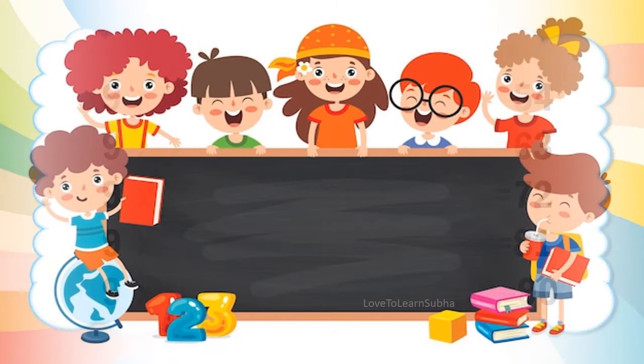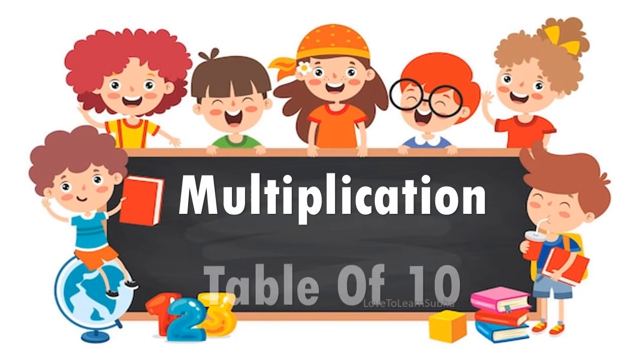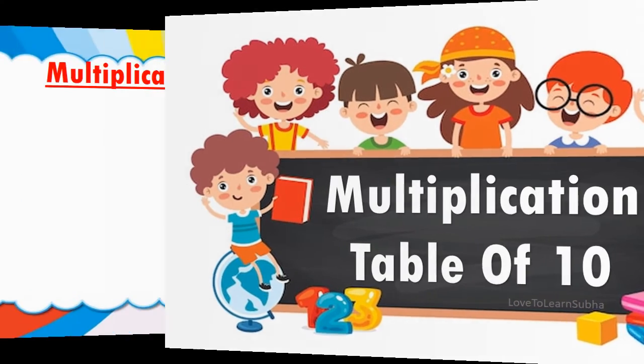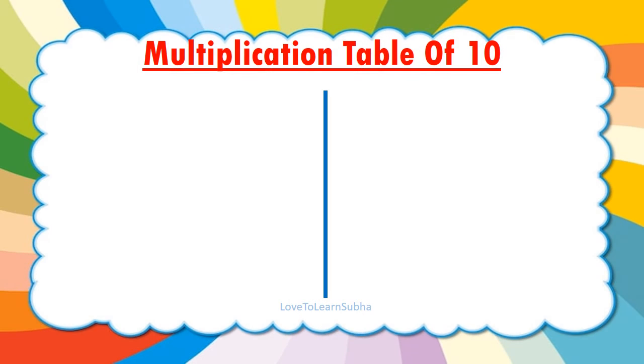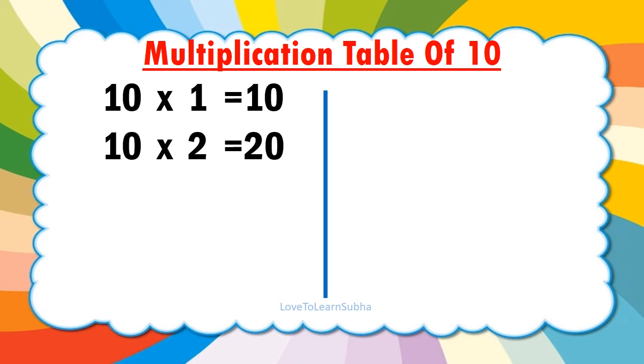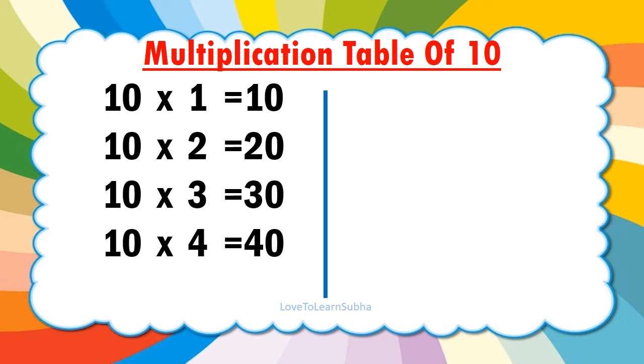Multiplication table of 10. 10 1's are 10. 10 2's are 20. 10 3's are 30. 10 4's are 40. 10 5's are 50.